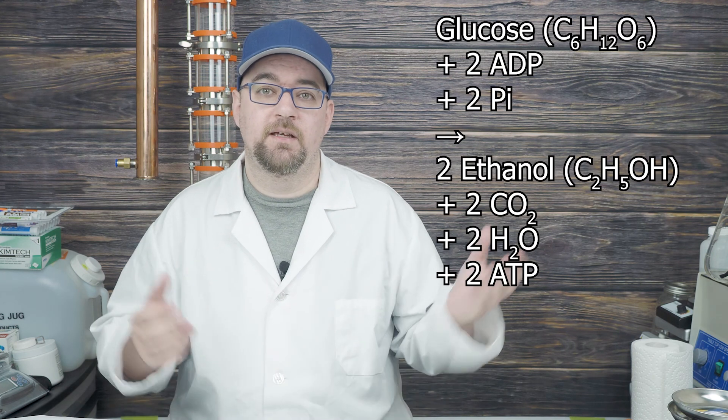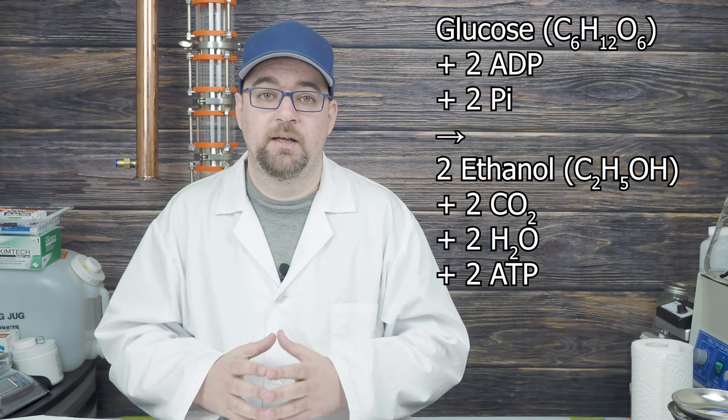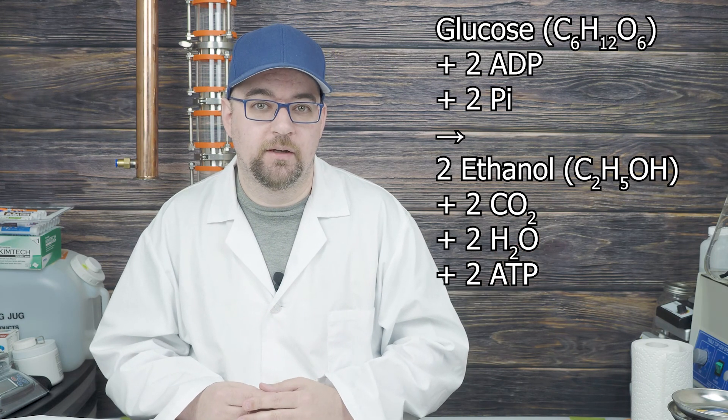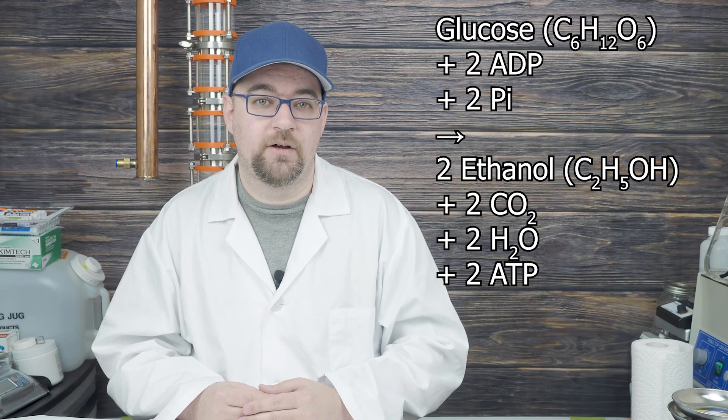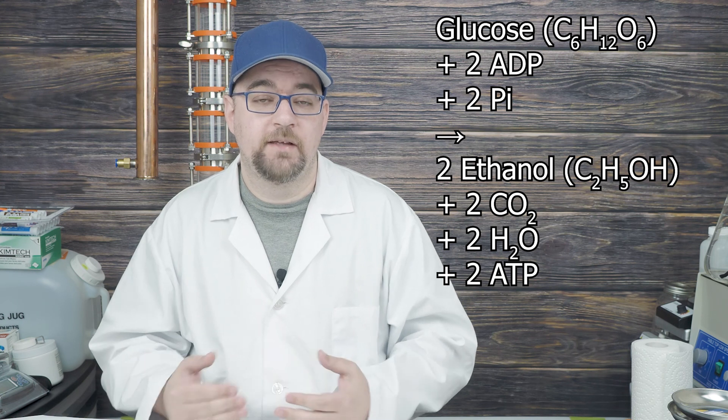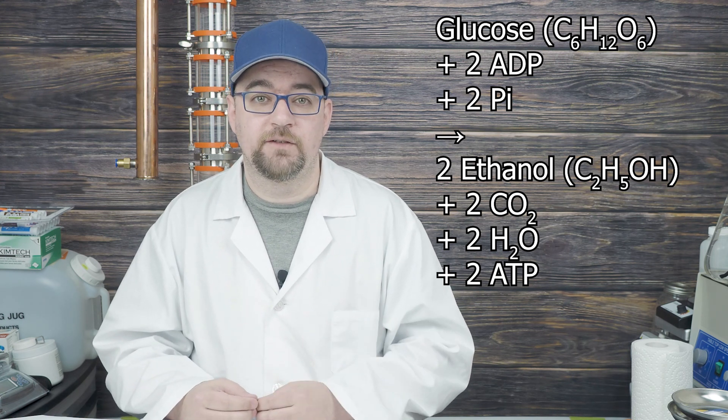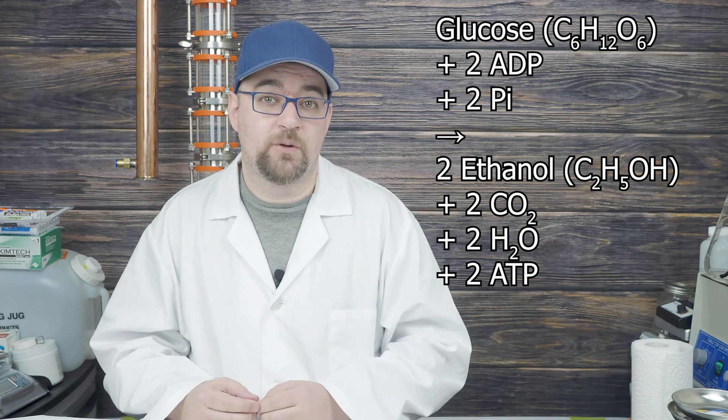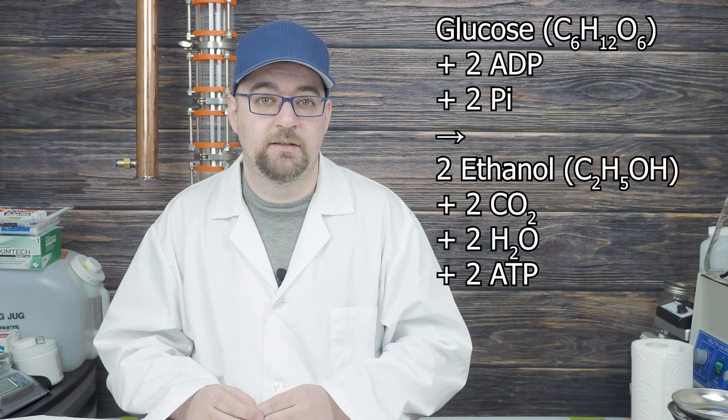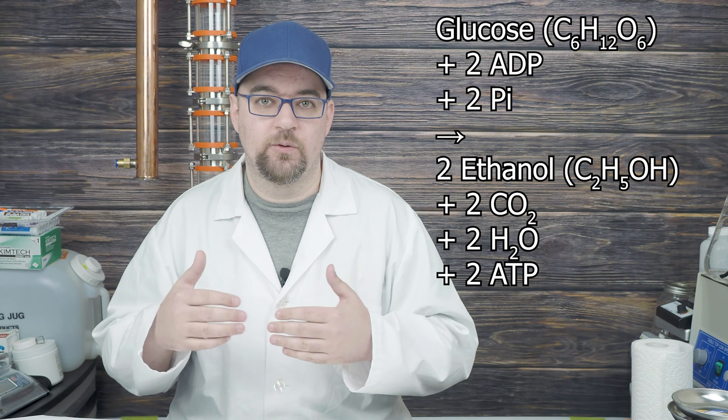So here's the simplified equation for fermentation of glucose. As you can see, for every one molecule of glucose, you get two molecules of ethanol, two molecules of CO2, and two molecules of water. The other components—ADP, which is adenosine diphosphate, PI, which is inorganic phosphate, and ATP is adenosine triphosphate—these are used to transfer energy around within the cell.